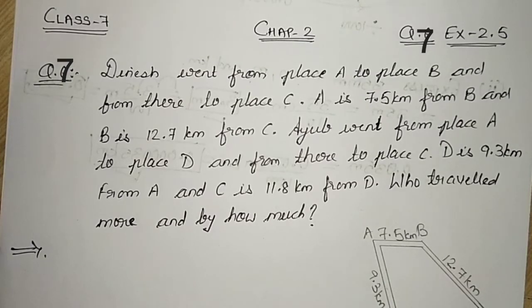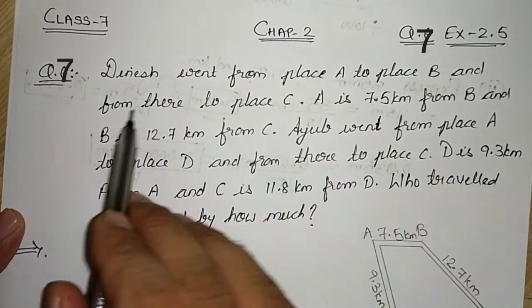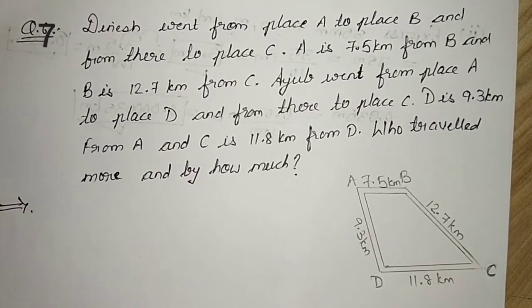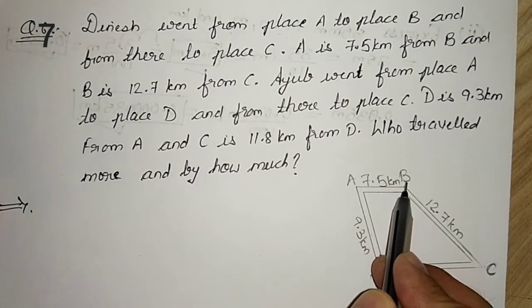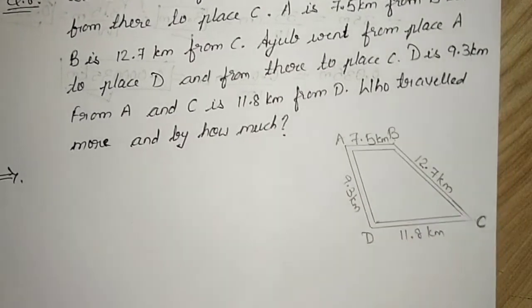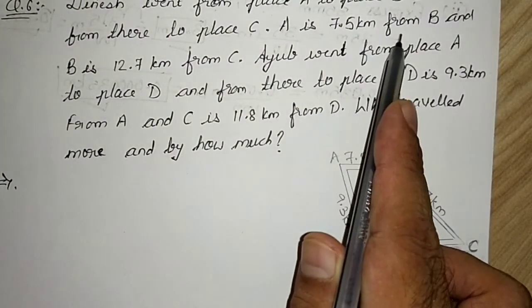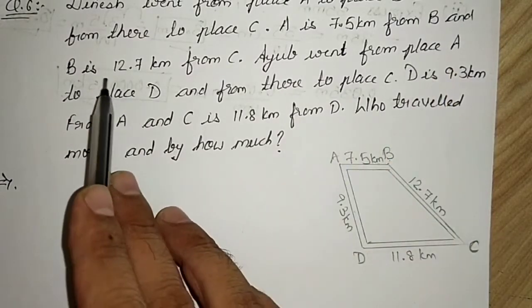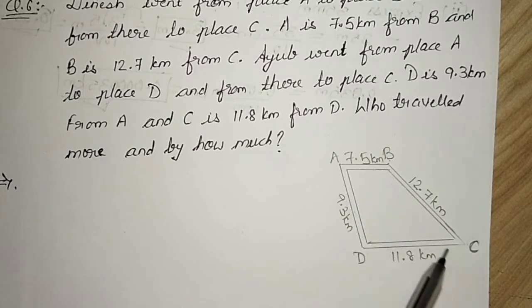Question number 6 says, Dinesh went from place A to place B and from there to place C. A is 7.5 km from B, and B is 12.7 km from C. Distance between B and C is 12.7 km.